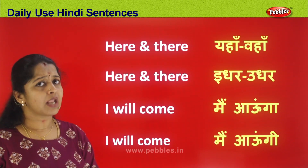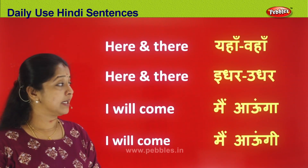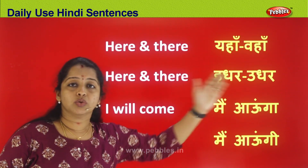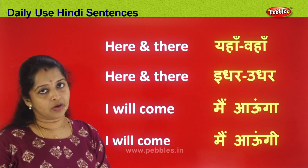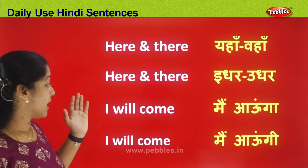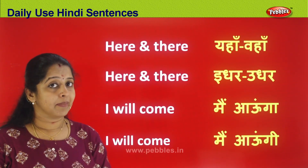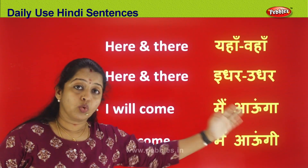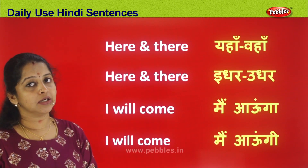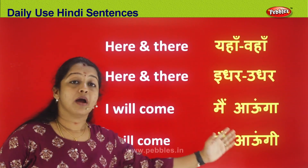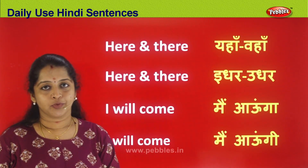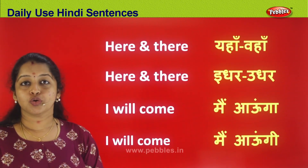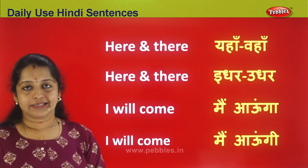To recap: 'here and there' is 'yaha vaha' or 'idhar udhar.' For 'I will come': if you are a boy, say 'may aunga'; if you are a girl, say 'may aungi.' I hope these words were helpful and informative for you.